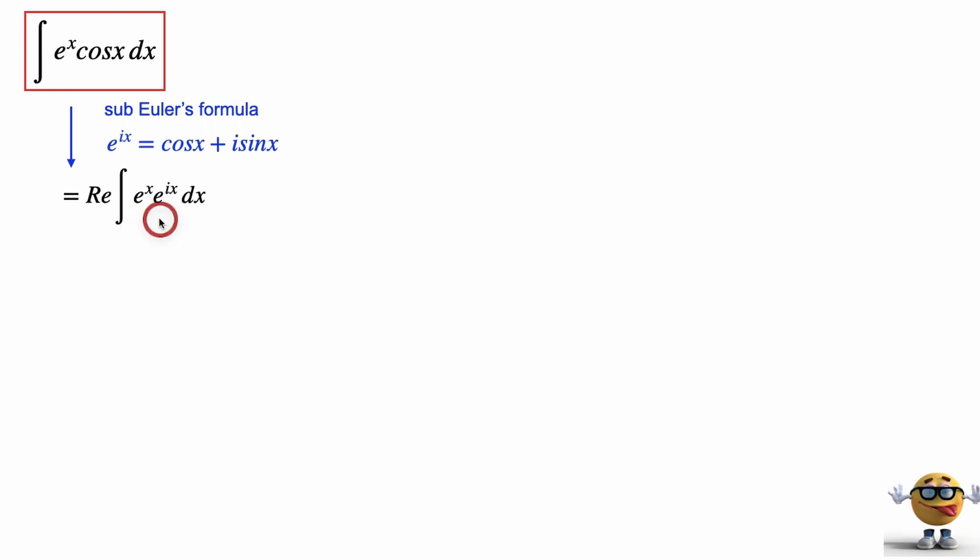And this is really cool because we can merge these powers together by adding the exponents. And this integral is a lot easier than this one. We can evaluate this right away, right off the hop. So it is e to the 1 plus i x divided by 1 plus i plus c. c is our integration constant.